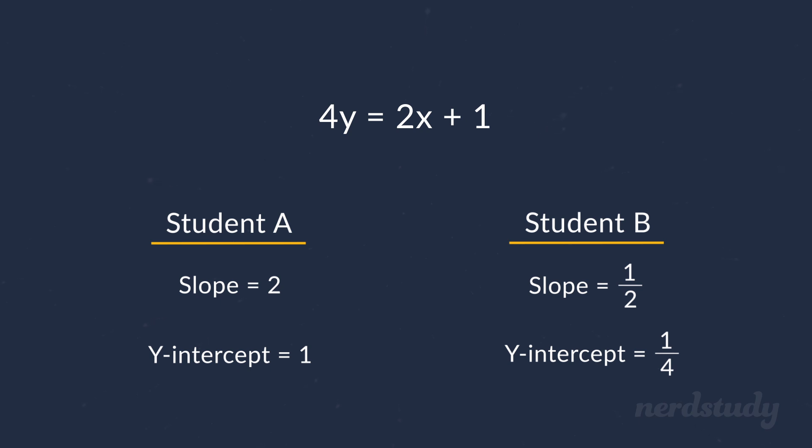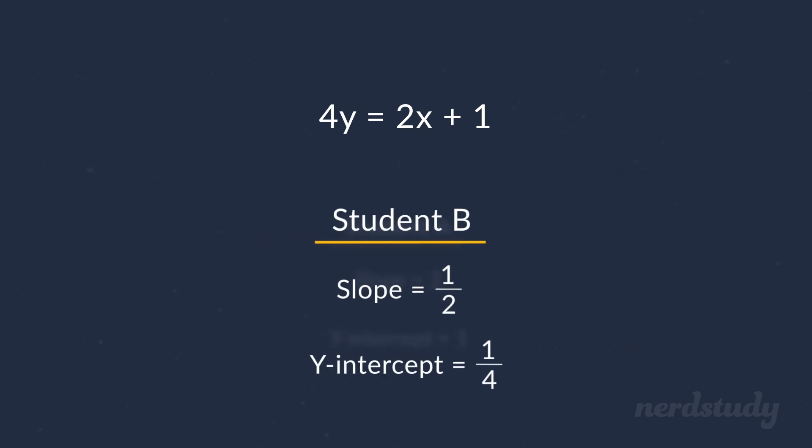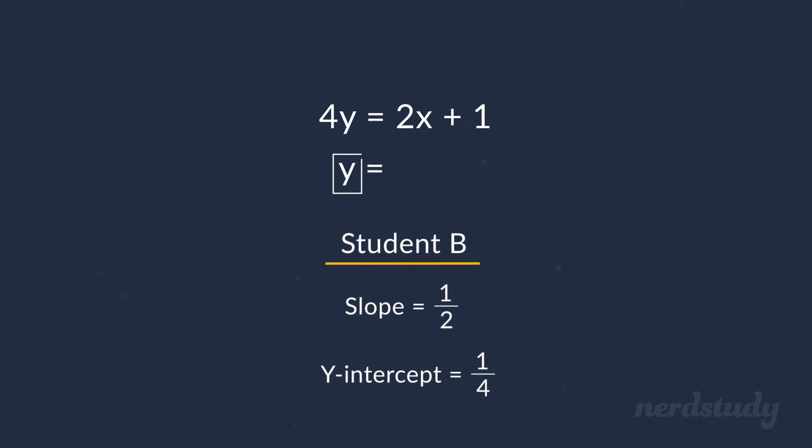Well, in this case, student B has the right answer. Now, it's important to be careful here. Some people might assume right away that the coefficient number right in front of the x variable is automatically the slope. But this is only the case when we've already isolated the equation to have the y variable alone on the left side. In this situation, we've got to first divide both sides by 4 to isolate for y to get the following.